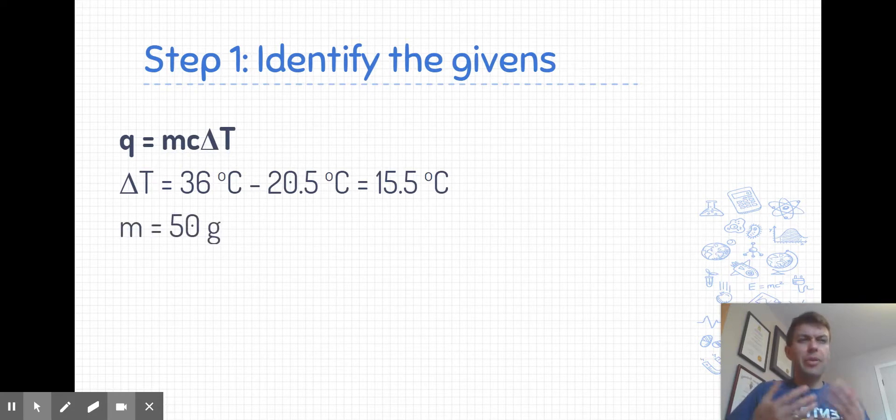Next up is mass. Now, this is often a confusing one because in the question, you're given two masses. You're given the mass of the solution, and you're given the mass of the magnesium. Well, remember, in the q equals mc delta t equation, the mass value is for the substance in which you are measuring the temperature change. And it's stated in the question that's the temperature of the solution that's increasing in temperature. So that's why we're using the 50 grams of hydrochloric acid.